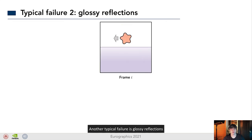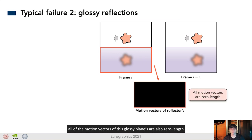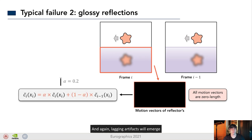Another typical failure is glossy reflections. Here, we have an object moving to the left. And below the object, there is a glossy surface. Again, let's rewind the time to the last frame. Similar to the shadow case, all of the motion vectors of these glossy planes are also zero length. And again, lagging artifact will emerge.